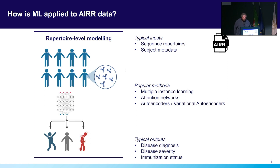With repertoire-level models, we typically see that they take entire repertoires or subsampled subsets of repertoires as their input, as well as subject metadata. We've seen a lot of methods applied to this, evolving from things like multiple instance learning and attention networks to more recently a lot of use of auto-encoders, especially variational auto-encoders. The applications for these types of models are really very focused on disease diagnosis, predicting disease severity.